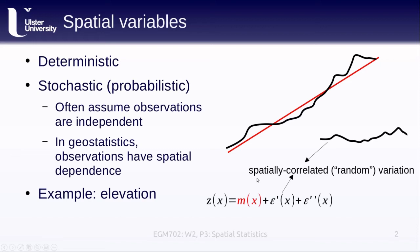We also see spatially correlated variation: the elevation doesn't follow the straight line exactly — there's variation around that line. This is the epsilon prime, the spatially correlated variation we're most interested in modeling with our probabilistic approach. And then we also have noise — either from boulders on the surface of the hill slope or from instrument error and measurement noise.